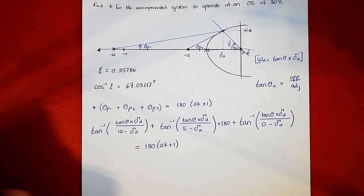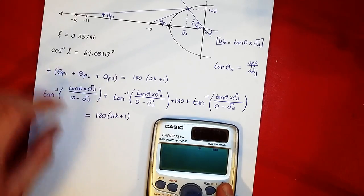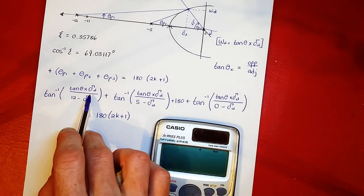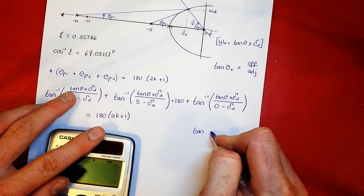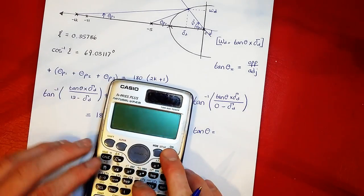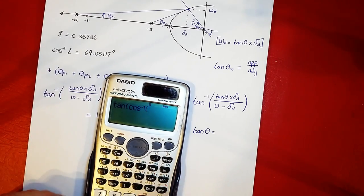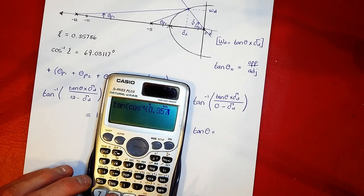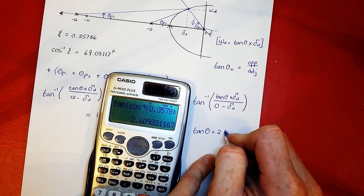Now let's use our calculators to help us solve this. We're going to make sigma d equal to x. We just want to find our tan thetas. So tan theta is equal to tan of arccos of 0.35786, and that is equal to 2.609.